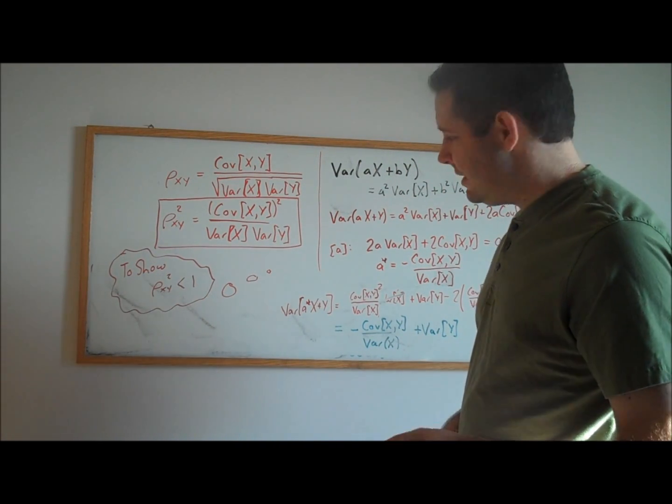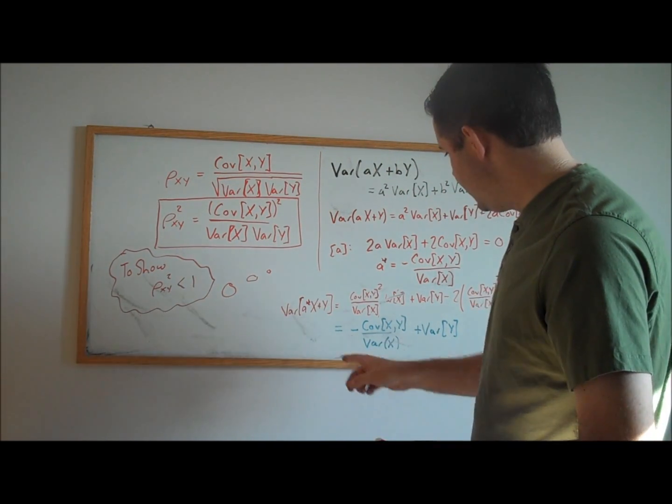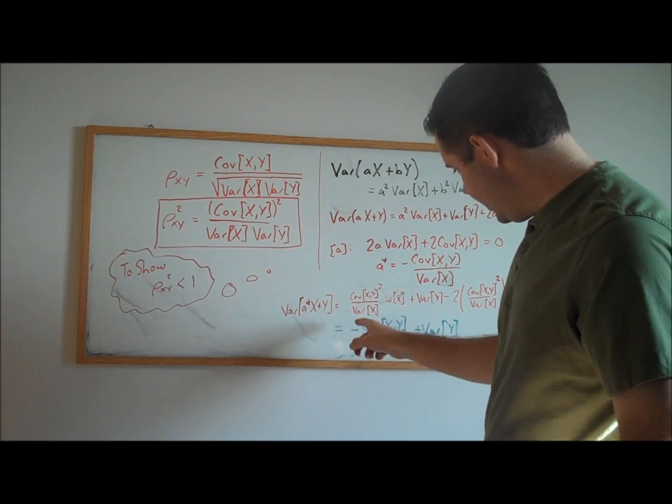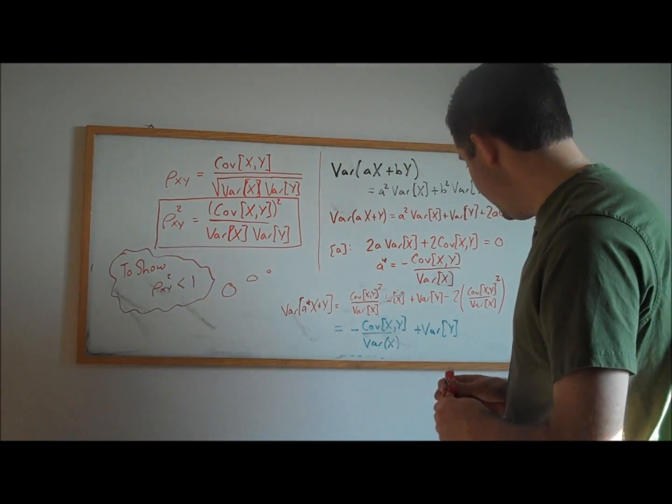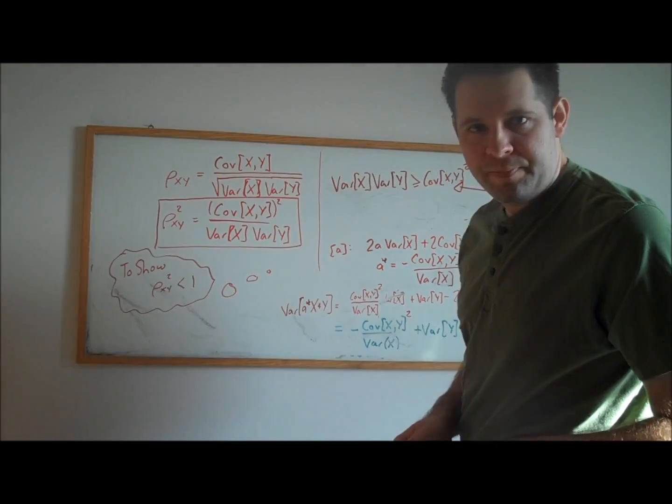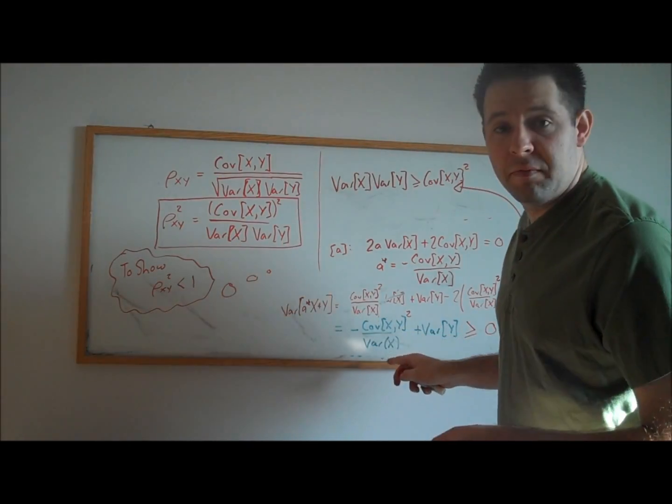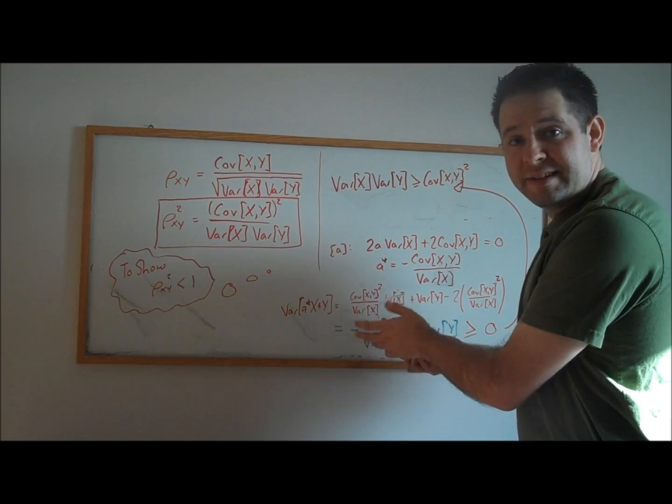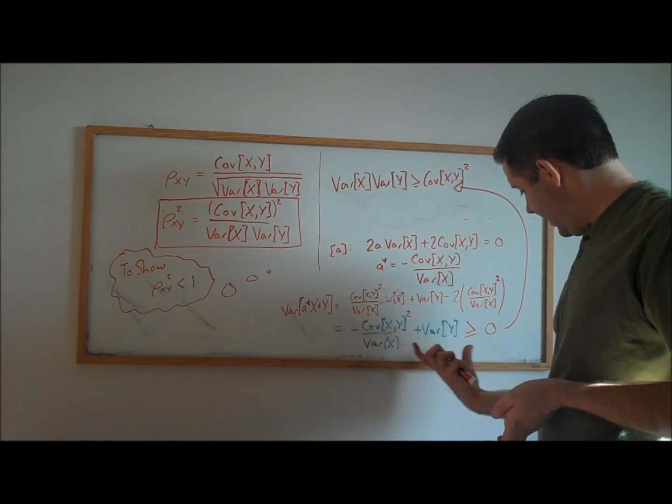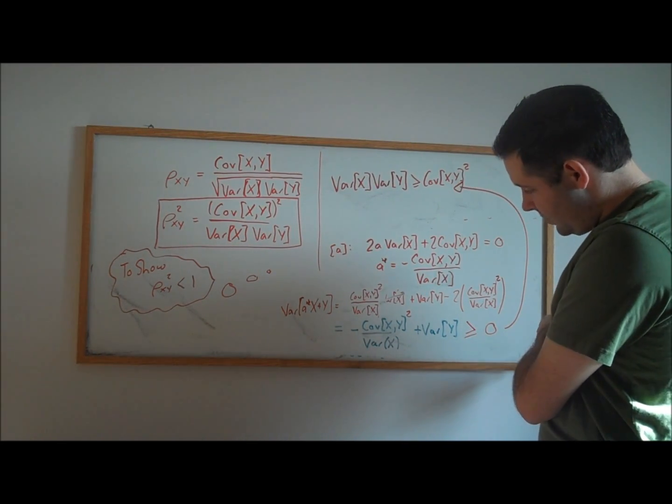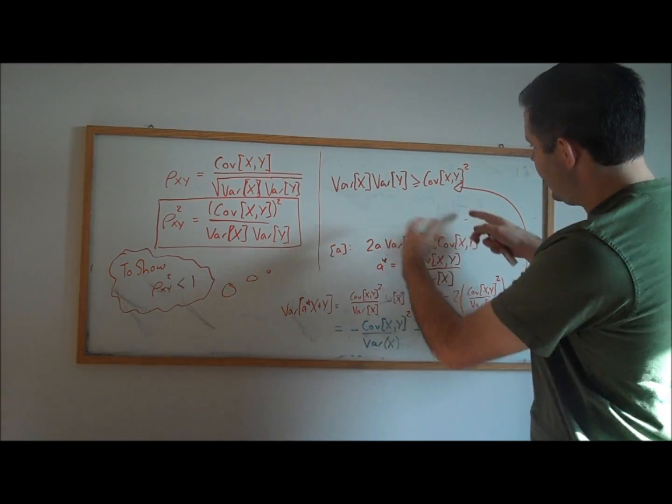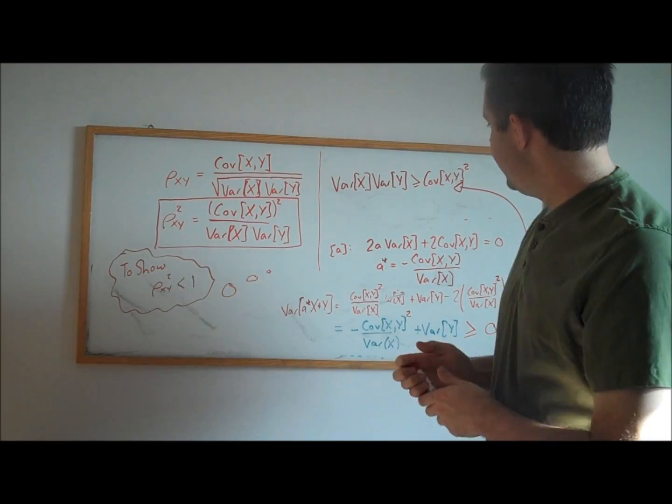Now one thing about variances is that they must be positive. So this is just an expression for a variance. But we know something very special about that. This is bigger than zero. Now this covariance squared over variance of x term is negative. If we want to make it positive, we can bring it on the other side of this inequality. And then we can multiply both sides by variance of x. So that's what we do to get this inequality here.